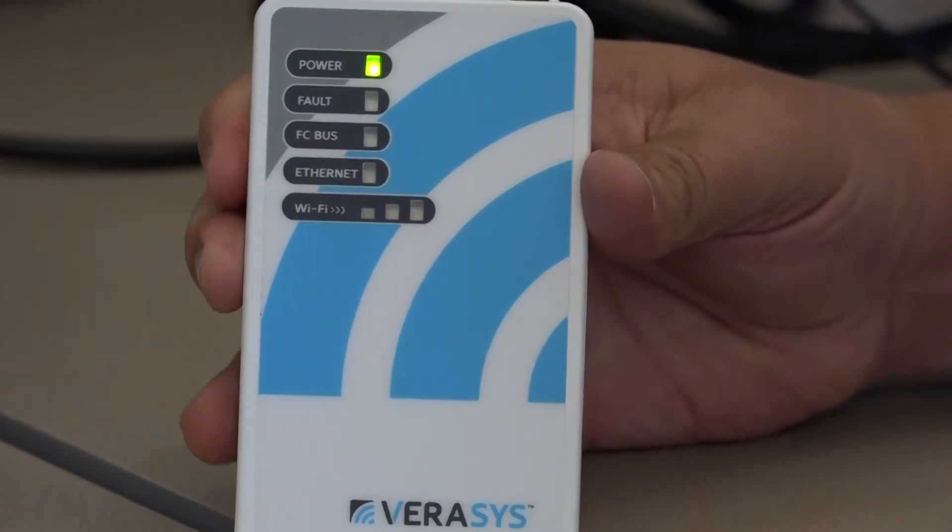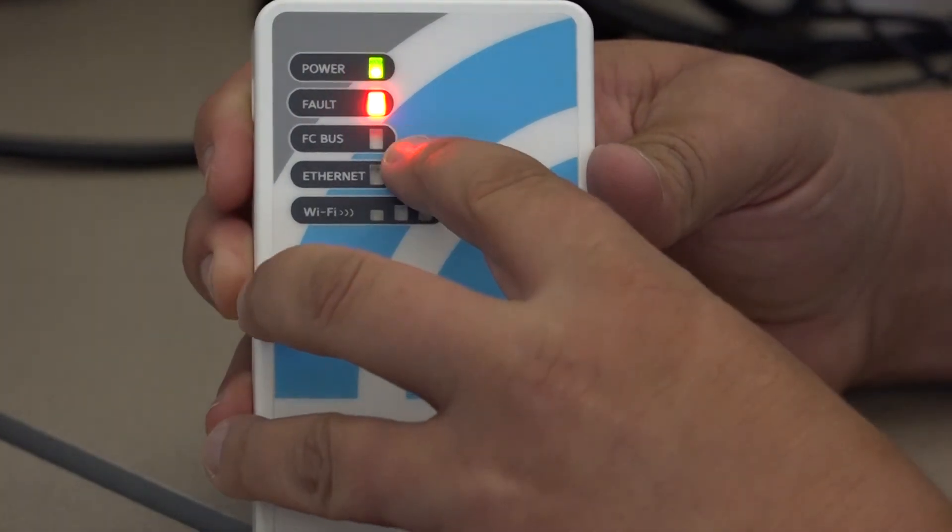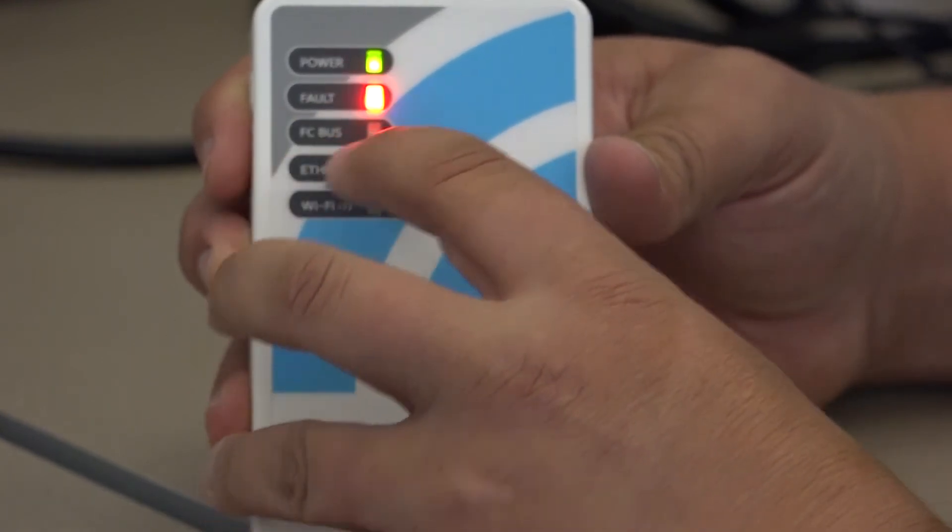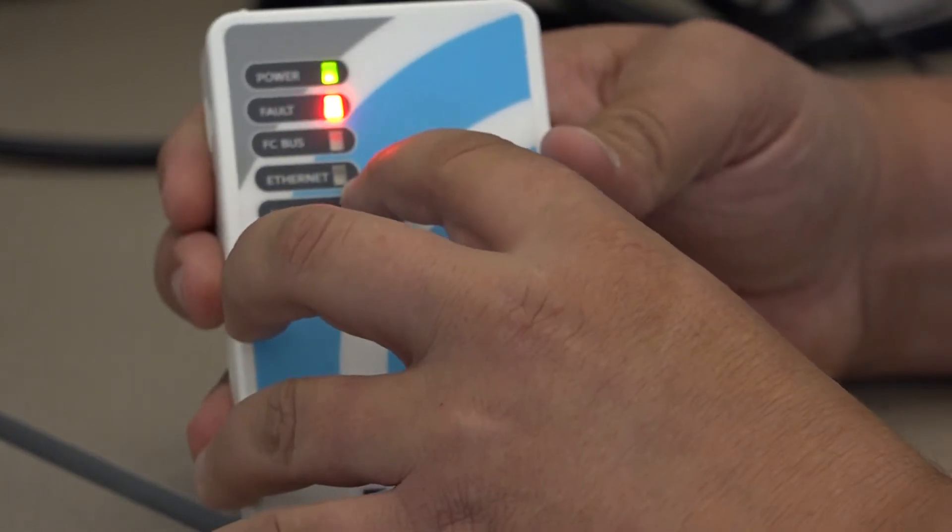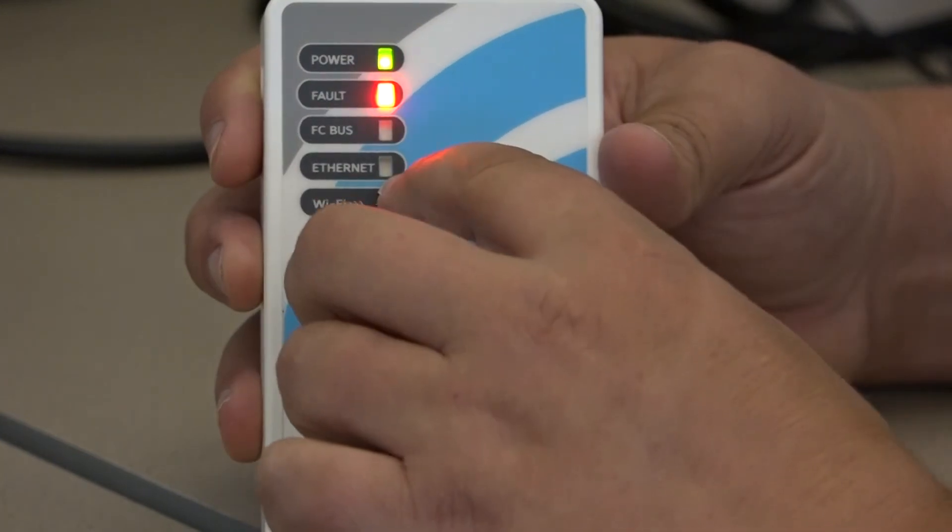You can see the power light just turned on. And then the fault light will come on as it boots up. There's an FC bus light, which is your field controller bus. And that'll start blinking when we have a connection to a system. And then the Ethernet light. So if we had the Ethernet plugged in, that light would come on.